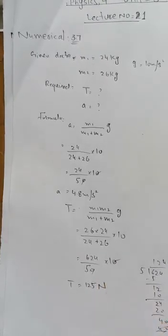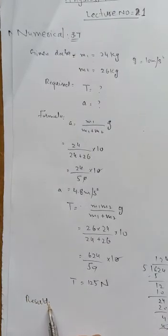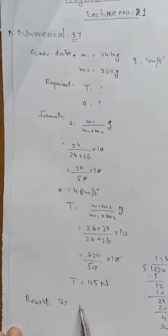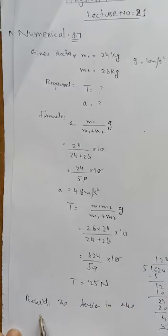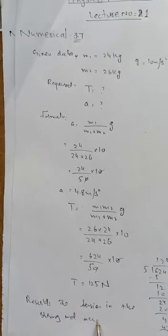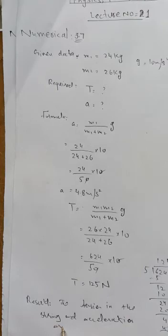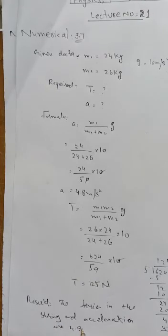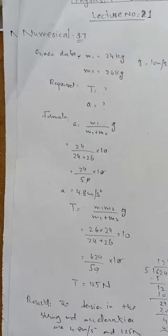Now we will write the result. The tension in the string and acceleration are 4.8 meter per second square and 125 newtons.